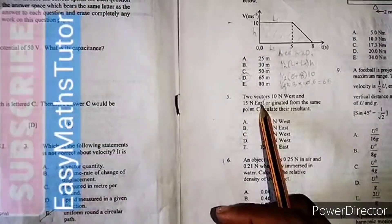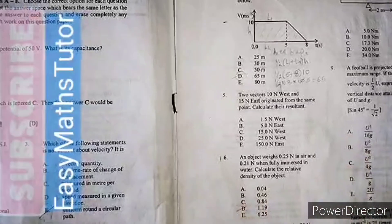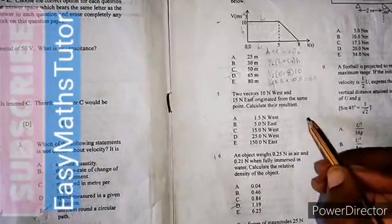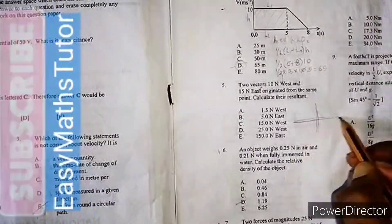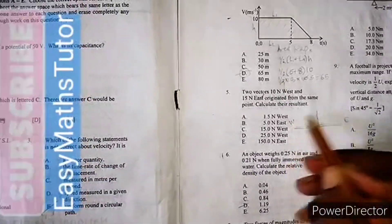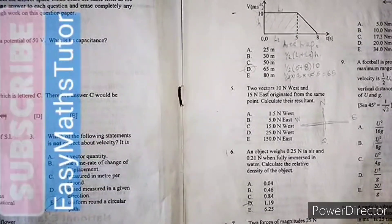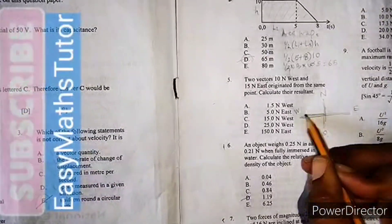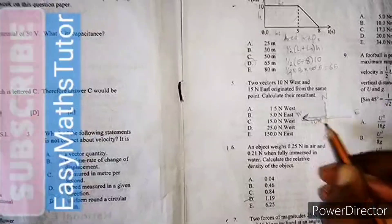Question 5: Two vectors, 10 newton west and 15 newton east, originate from the same point. Calculate their resultant. Let's draw the diagram. We'll draw a line which will show us north, east, west, and south. This is the east, this is the west, this is the north, this is the south.